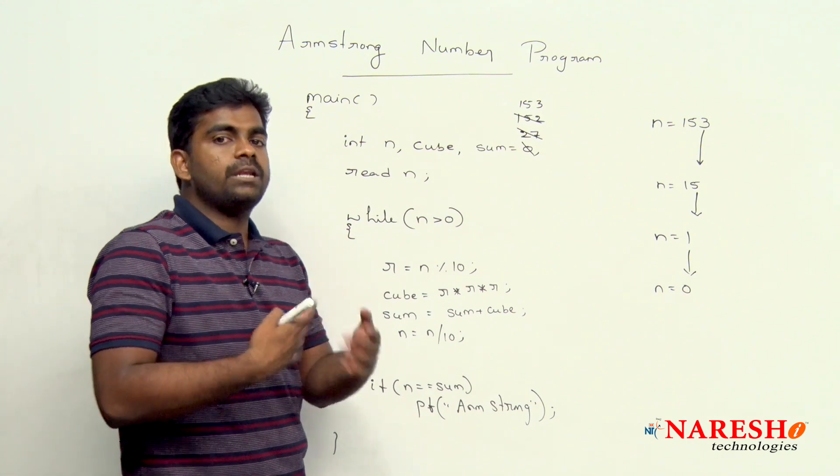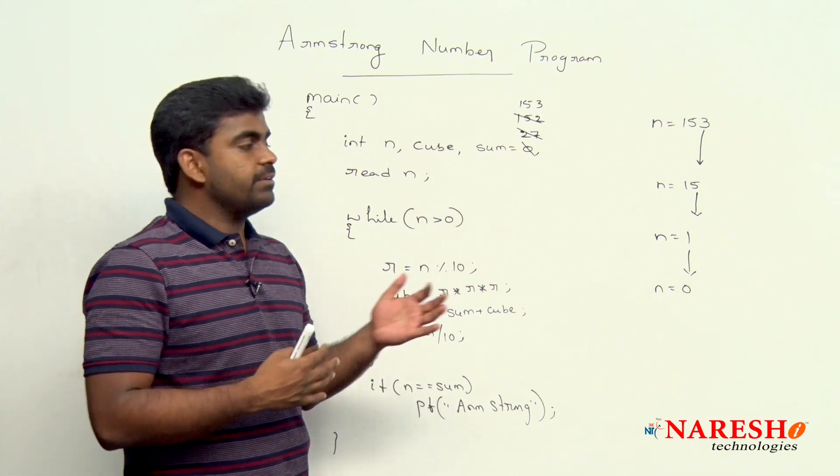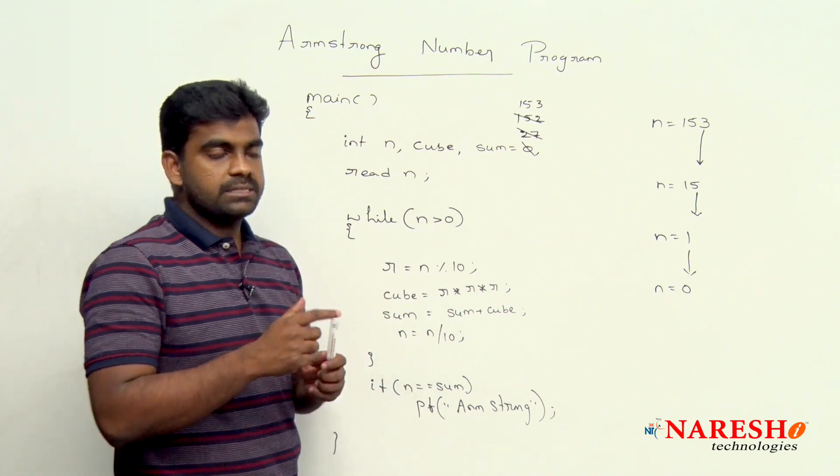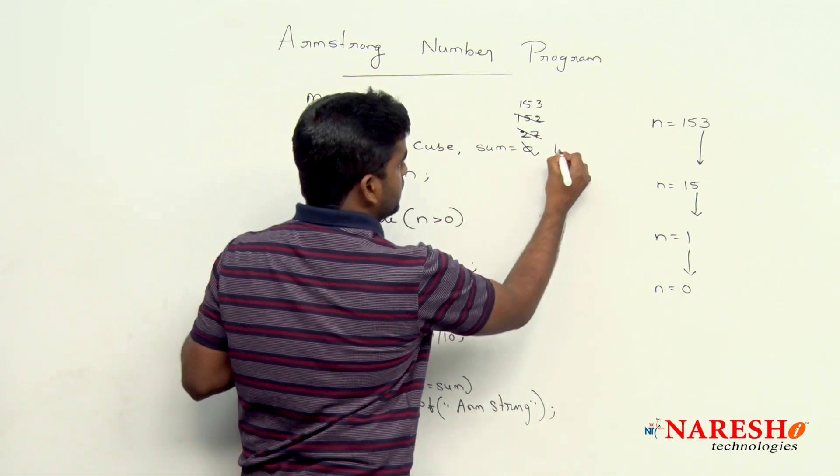Every time we are changing the value of n. Finally, n value becomes 0 always. We need to check sum value and n value. That is the reason we are taking one extra variable called temp.